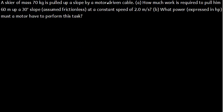Now let's look at the next question. A mass of 70 kg is pulled up a slope by a motor driving a cable. (a) How much work is required to pull it 60 meters at a 30-degree slope? Assume no friction and constant speed of 2 meters per second. (b) What power, expressed in horsepower, must the motor have?